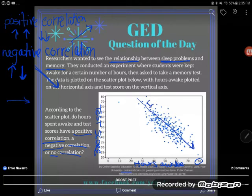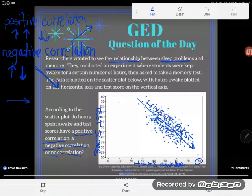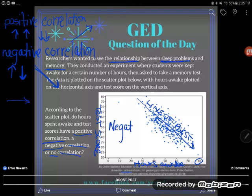We call that the line of best fit. And you could see that if you did draw a line right through the middle of those dots, it's basically going down. And so we definitely have negative correlation on this graph.